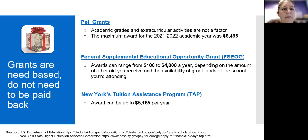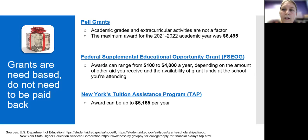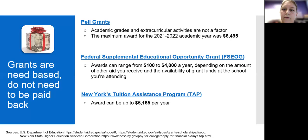Grants are need-based and do not need to be paid back — I call this free money. You get these from the federal government or the state government. There's the Pell Grant, which is based only on financial need. Academic grades and extracurriculars are not a factor. The maximum award for the 2021-2022 academic year was $6,495. There's also the Federal Supplemental Educational Opportunity Grant, and those awards can range from $100 to $4,000 a year, depending on the amount of other aid you receive and the availability of grant funds at the school you're attending.